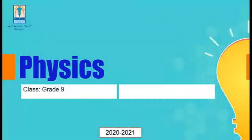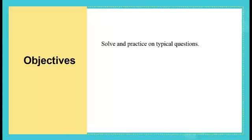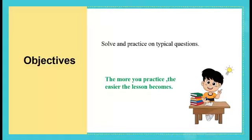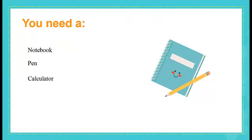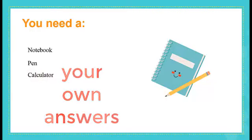Good morning grade 9 students. Today we're going to practice on some typical exercises related to chapter 5 DC voltage. The only objective for today is to solve and practice on typical questions. Please prepare a notebook, a pen, and a calculator. As usual, I would like to ask you to pause the video whenever you read a question, to give yourself time to think about the question and to write your own answer. Let's start with the first problem.